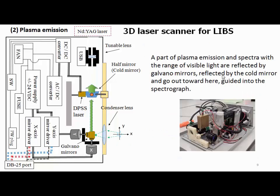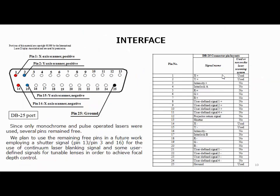The plasma is generated, and part of the plasma emission — which spans the visible light range — is reflected by the galvanometer mirror and then reflected by the cold mirror. The cold mirror only reflects light in the visible range.